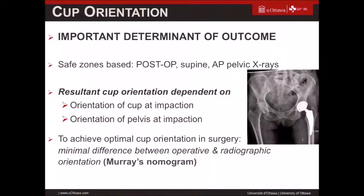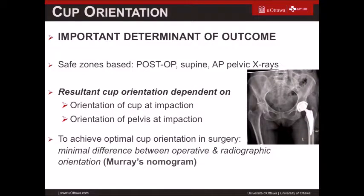We all know that proper cup orientation is an important determinant of outcome after joint replacement surgery. There are safe zones which are usually assessed on the supine AP pelvis, and we know that the resultant cup orientation is dependent on the orientation at the time of impaction at surgery as well as the orientation of the pelvis at that time. To achieve optimal cup orientation, you want a minimal difference between what you achieve in surgery and what you measured radiographically.